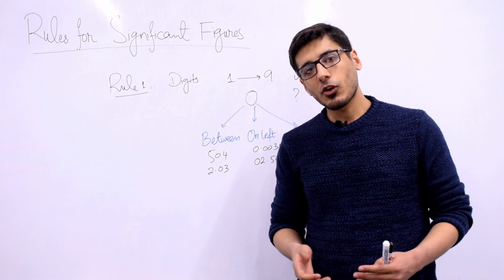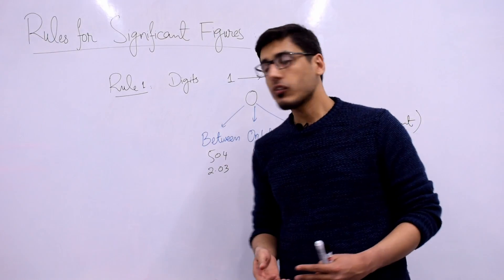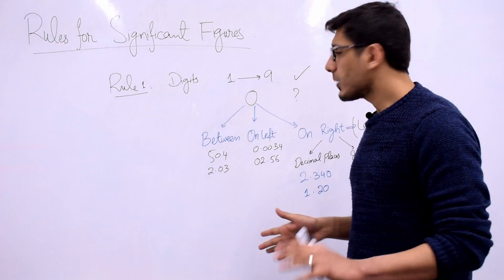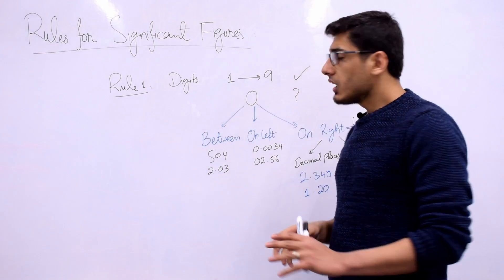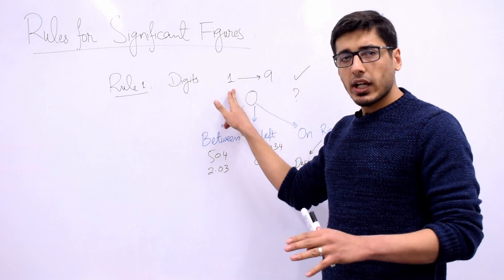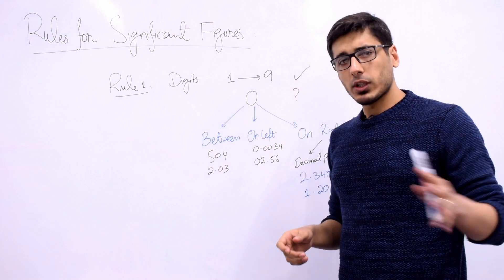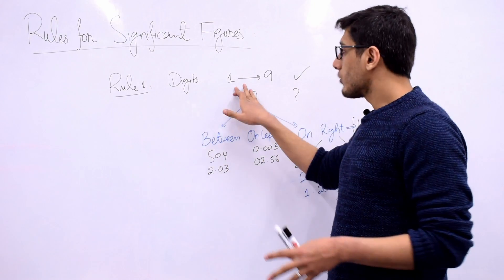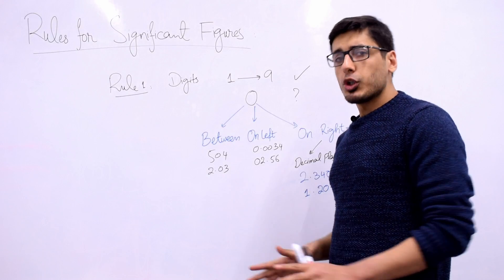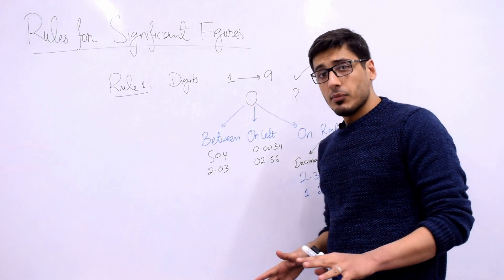Let's talk about Rule 1, which is about digits. The first part is simple: any digit from 1 to 9 — 1, 2, 3, 4, and so on up to 9 — if you see any of these digits in your measurement, they are going to be significant. That was easy.